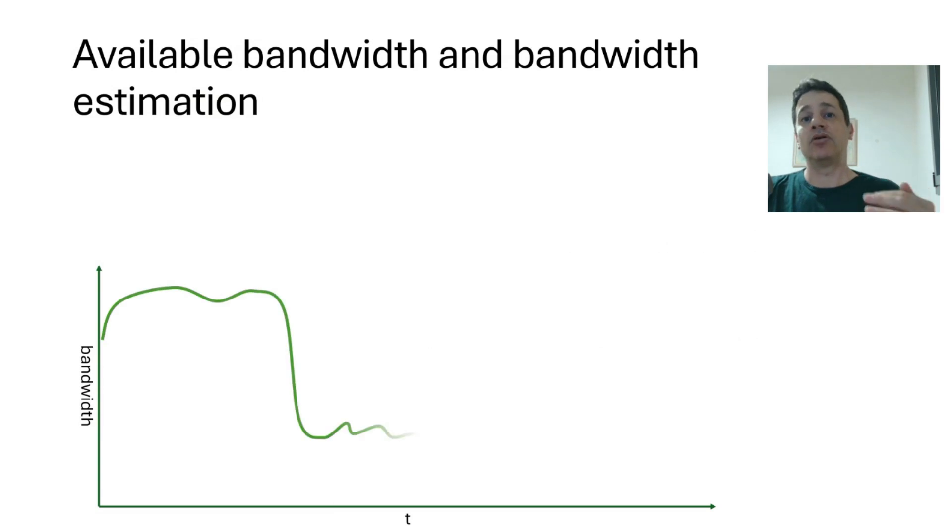Available bandwidth is the amount of bandwidth that we have over time in our network to be able to either send or receive data. This changes over time and it's dynamic in nature. We don't know what it is going to be. It is affected by whoever is using the network, what happens along the routes, and many other parameters.